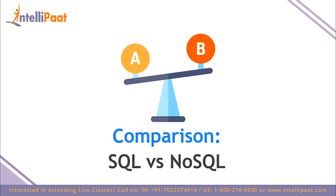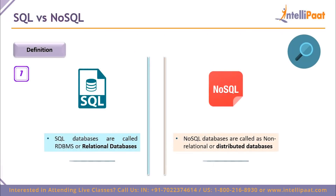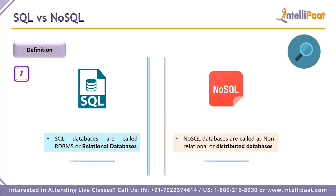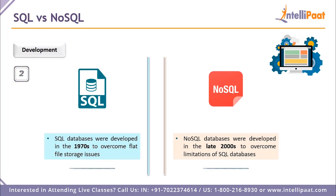Now for the head-on comparison between SQL and NoSQL. On definition: SQL databases are called RDBMS — Relational Database Management Systems — while NoSQL databases are called non-relational or distributed database management systems. On development: SQL was developed in the 1970s, making it a 50-year-old technology that came about when there were struggles with flat file storage. NoSQL was developed on a large scale in the late 2000s to overcome the limitations of SQL databases.